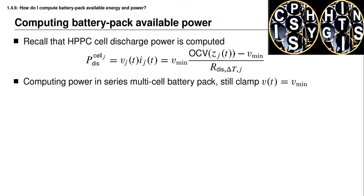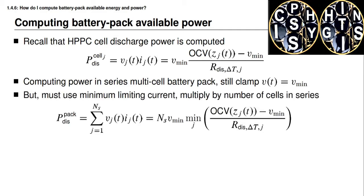When computing power in a series-connected multi-cell battery pack, we still consider the limiting condition to be when any cell voltage encounters either the minimum cell voltage for discharge or the maximum cell voltage for charge. So for discharge, the value V_min in the power equation does not change, but the allowed current can change because individual cells might have different limiting currents. In a series-connected battery pack, the same current flows through every cell.